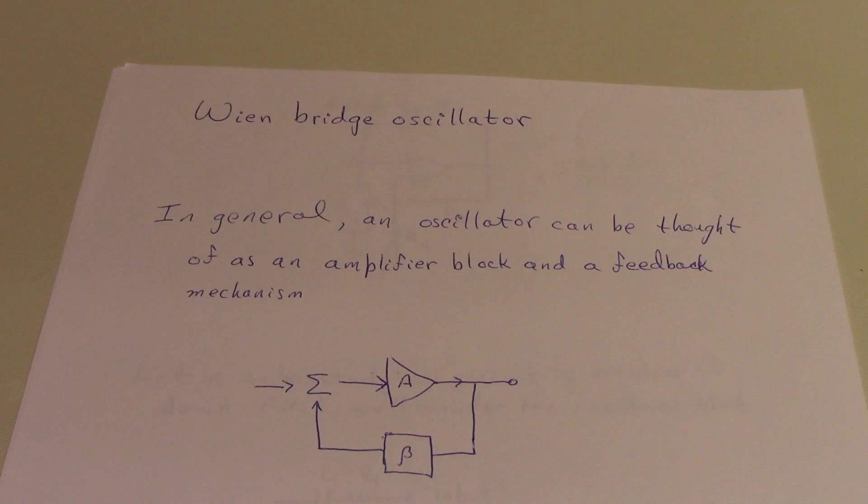In video number 26 we discussed the Wien Bridge Oscillator, and you'll recall that in that video we talked about how an oscillator is really just an amplifier that has a little bit of the output picked off and fed back into the input.